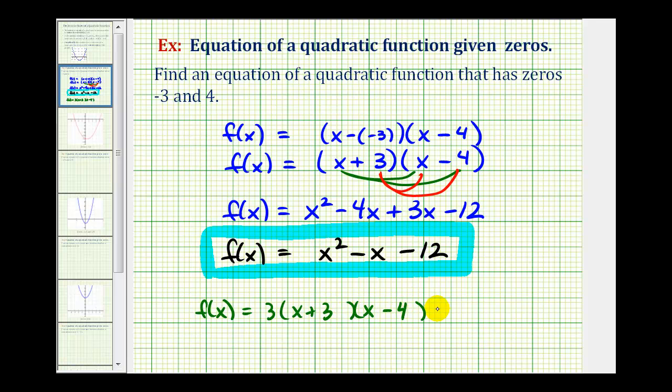To multiply this out, we would start by multiplying the two binomial factors. So we'd have three times the quantity x squared minus x minus 12.